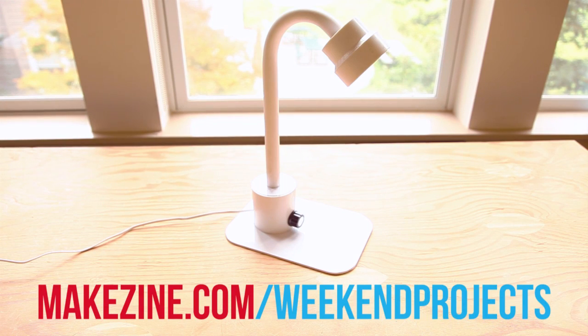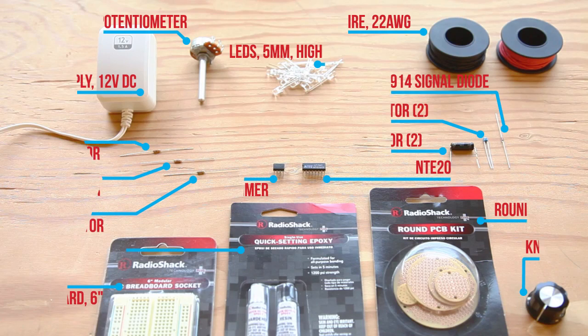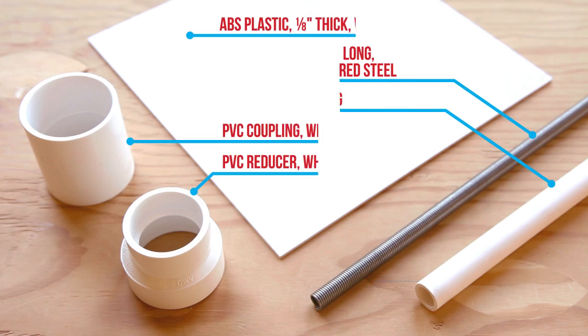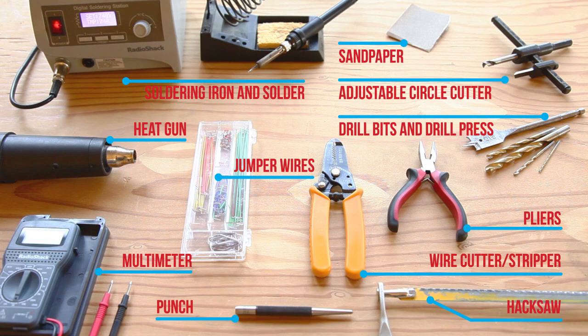The full build instructions, materials list, circuit, and cutting template are available on the project page. To make the little big lamp, you'll need these parts, these supplies, and these tools.